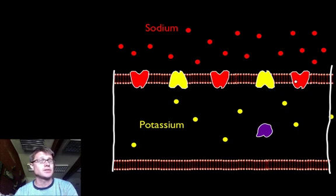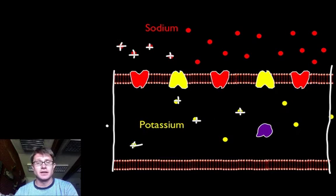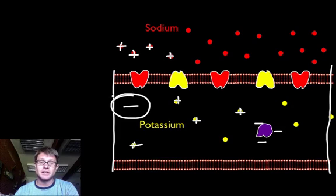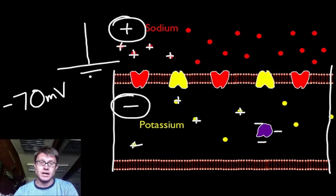Every sodium ion has a positive charge, and every potassium ion has a positive charge as well. We have a lot more positive charge on the outside than on the inside, and the proteins on the inside carry negative charges. So it's more negative on the inside and more positive on the outside. In a typical neuron we can actually measure that — it's a voltage of negative 70 millivolts. It's essentially a battery across our neuron, with energy or the ability to do work across that membrane.